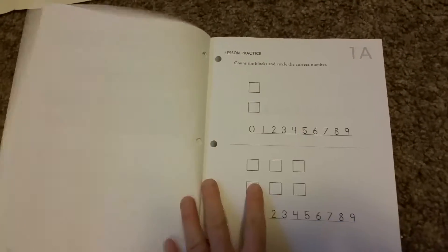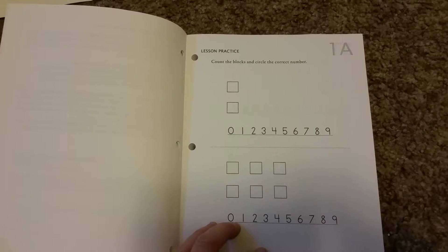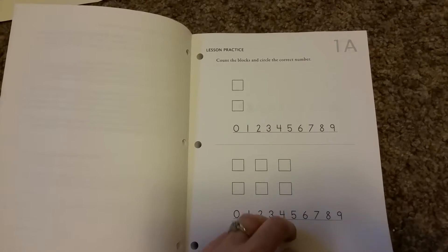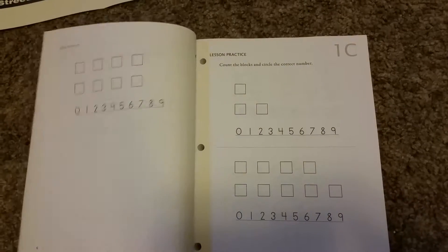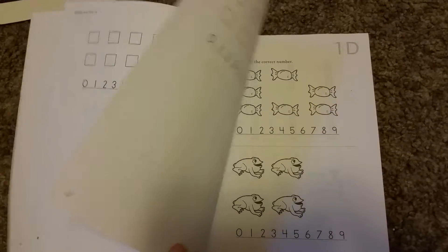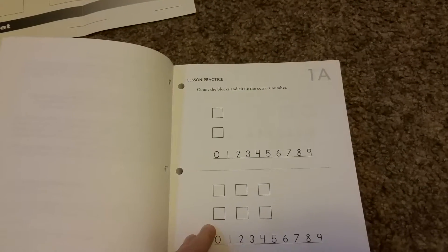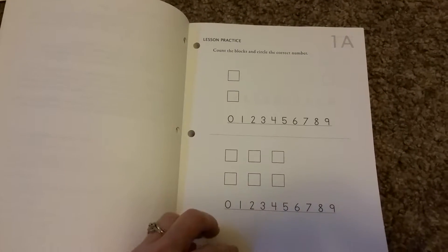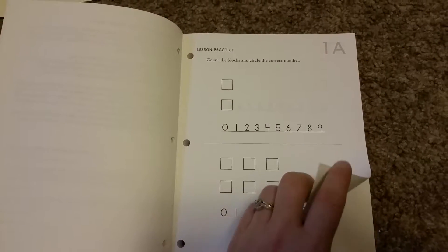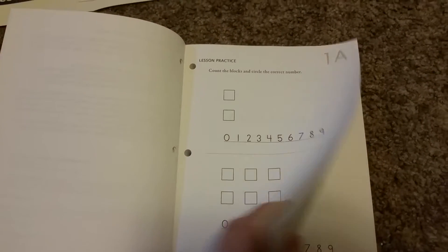So the first, like say for Monday, we would do the introduction where you learn the new concept. So that would be, it goes 1A, 1B and 1C. Those are all the new concept, the new lesson. They don't have to do all three worksheets. It's just there in case your child needs it. Otherwise, we just do one or two depending on how well it is or their attention span.